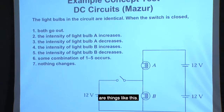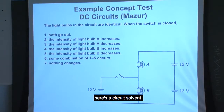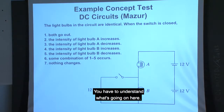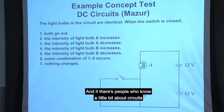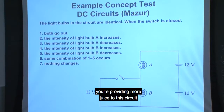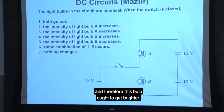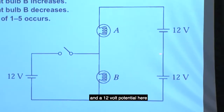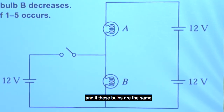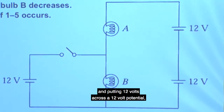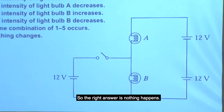Concept tests are things like this. Normally at MIT we say: here's a circuit, solve it — write the equations and solve it. But this is a conceptual question: what happens when we close the switch? There aren't really equations to solve; you have to understand what's going on. The naive view is that closing the switch provides more juice to the circuit and the bulb ought to get brighter. The expert view is no — there's a zero potential here, a 12-volt potential here, and a 24-volt potential here. If these bulbs are the same, the potential splits in half, giving 12 volts across a 12-volt potential — so nothing changes.